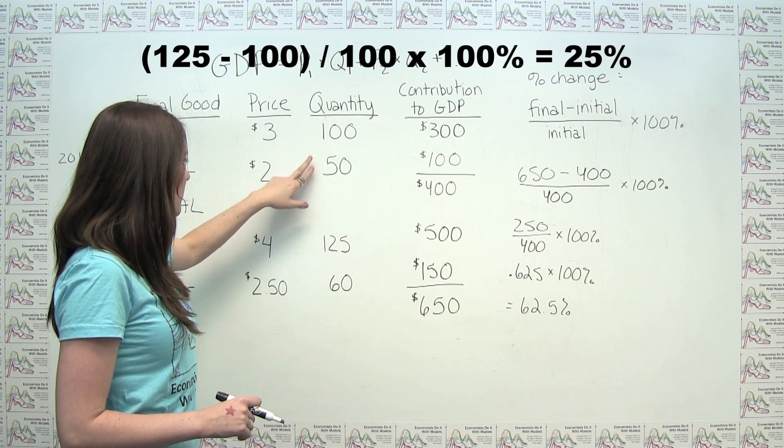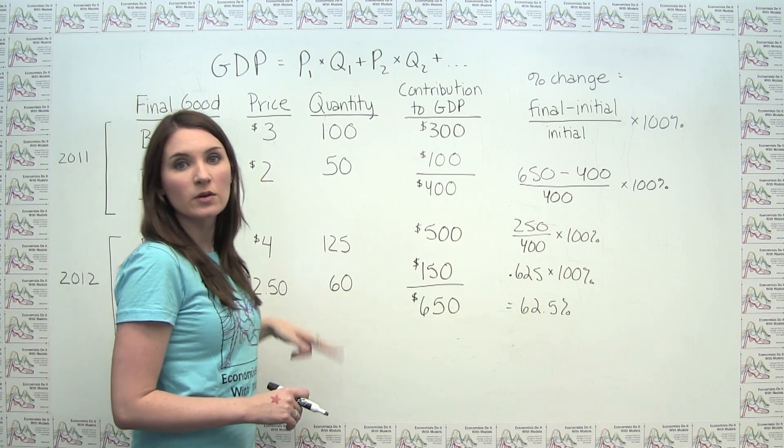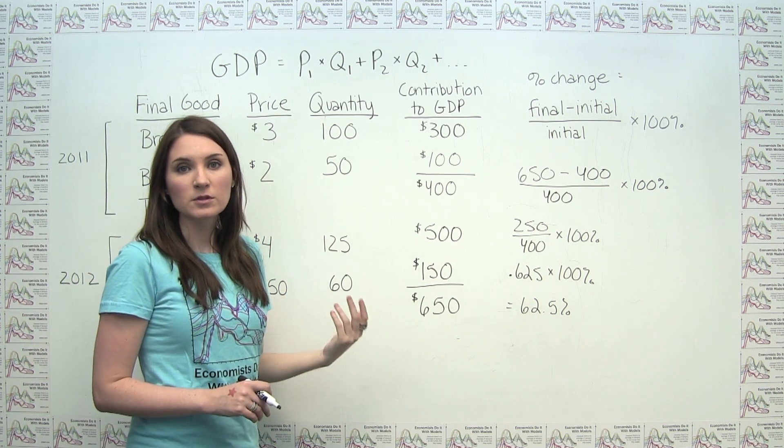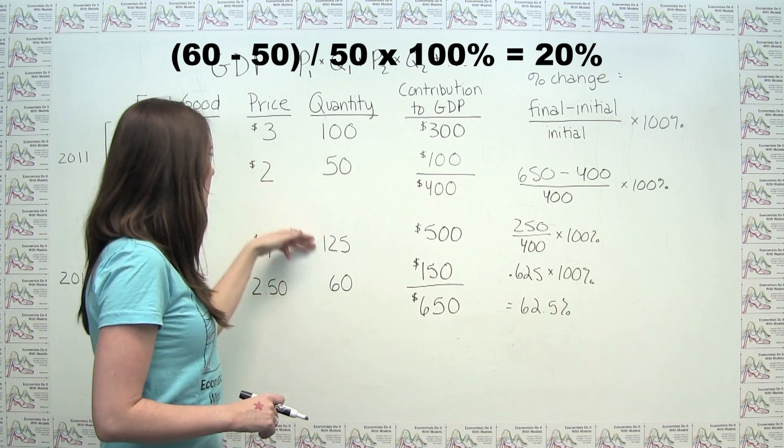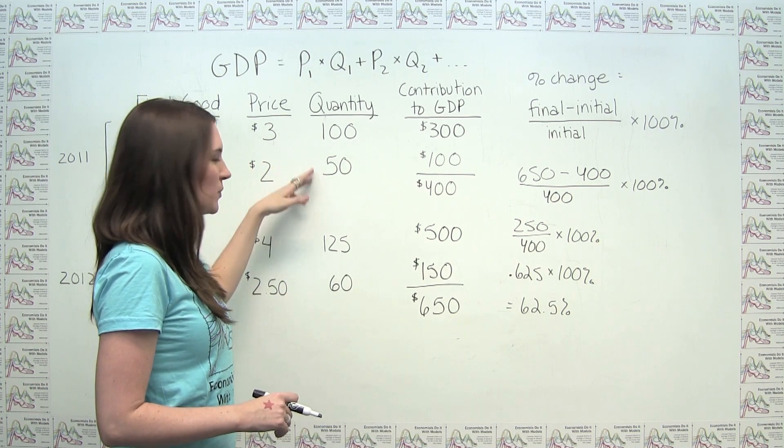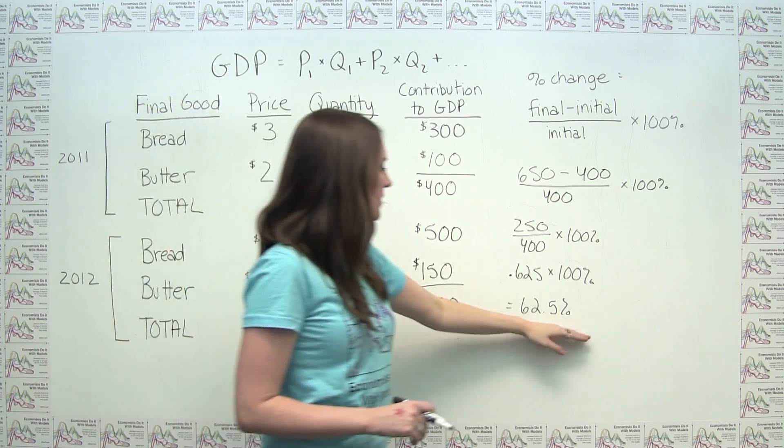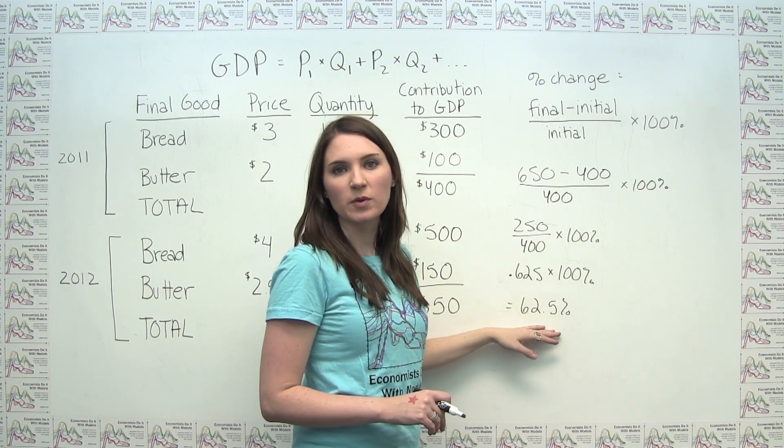Also, our production of butter went from 50 to 60, which is an increase of 20%. But you'll notice here that we have an increase of 25% and 20%, but yet we have an increase in GDP of 62.5%.